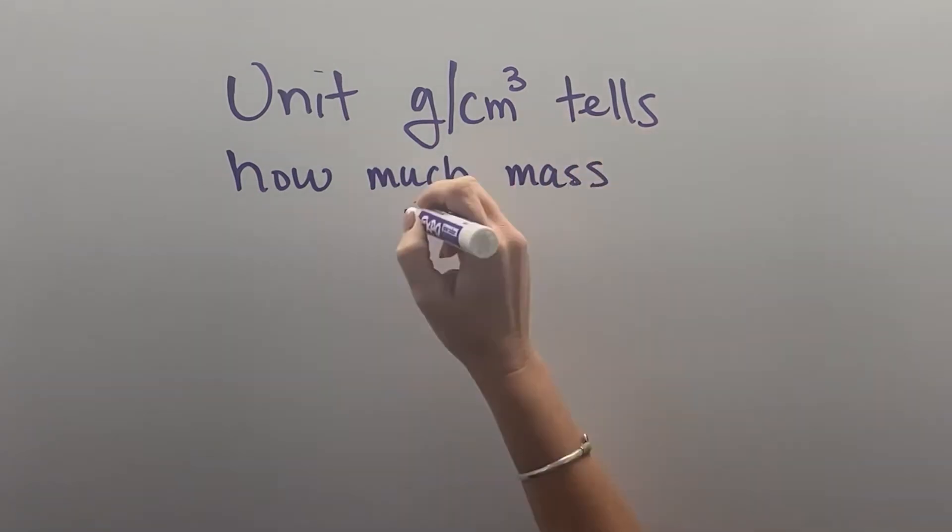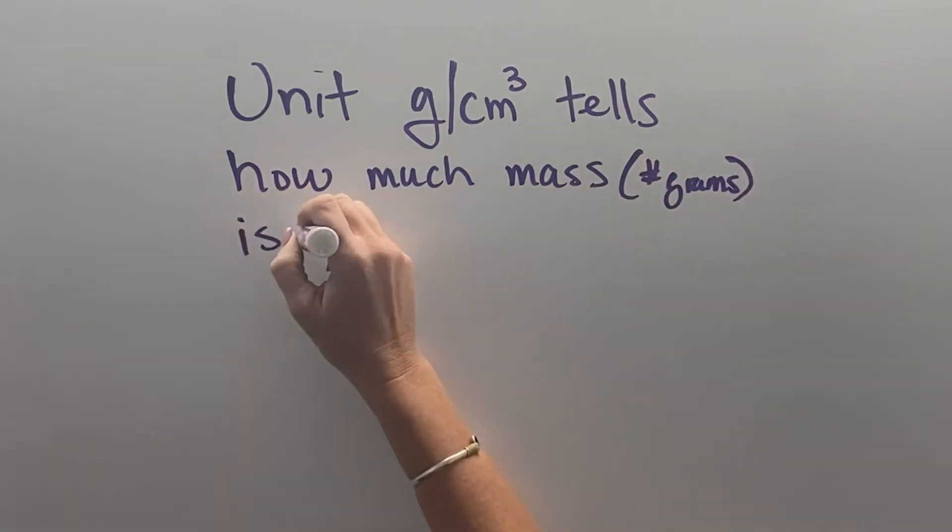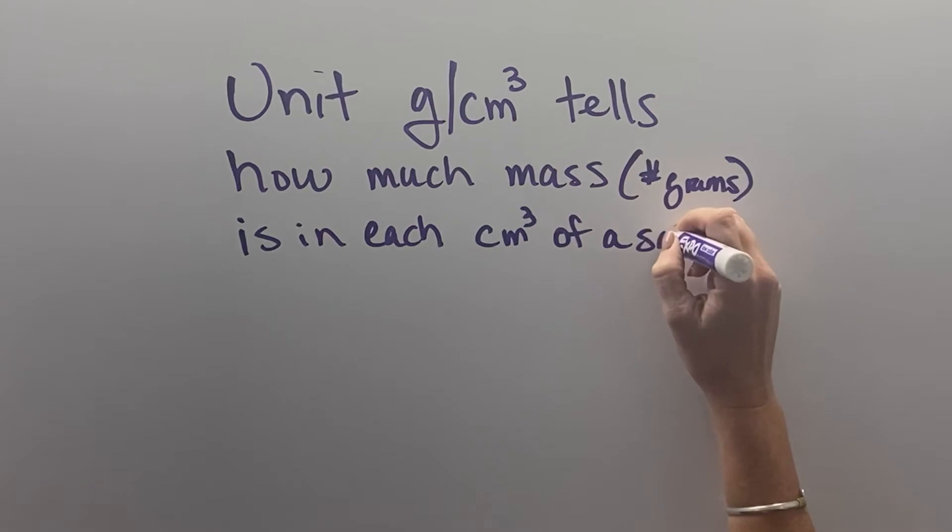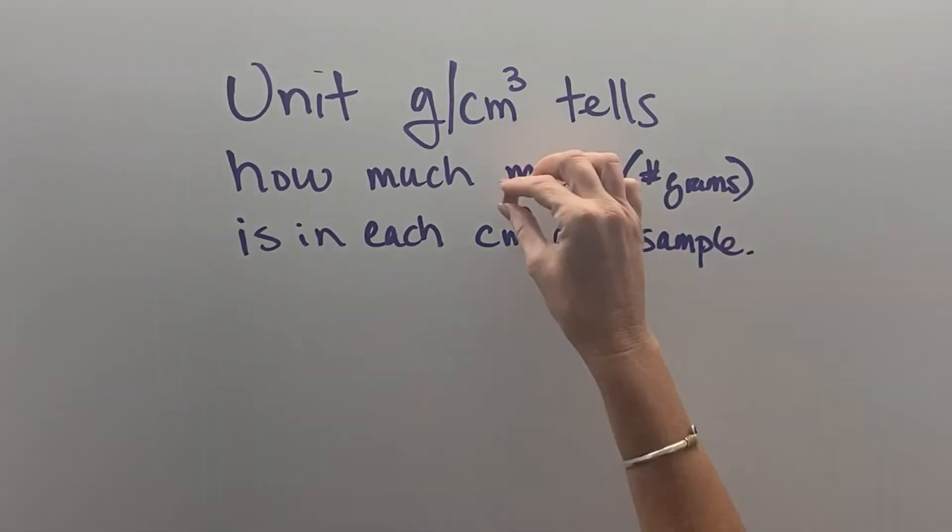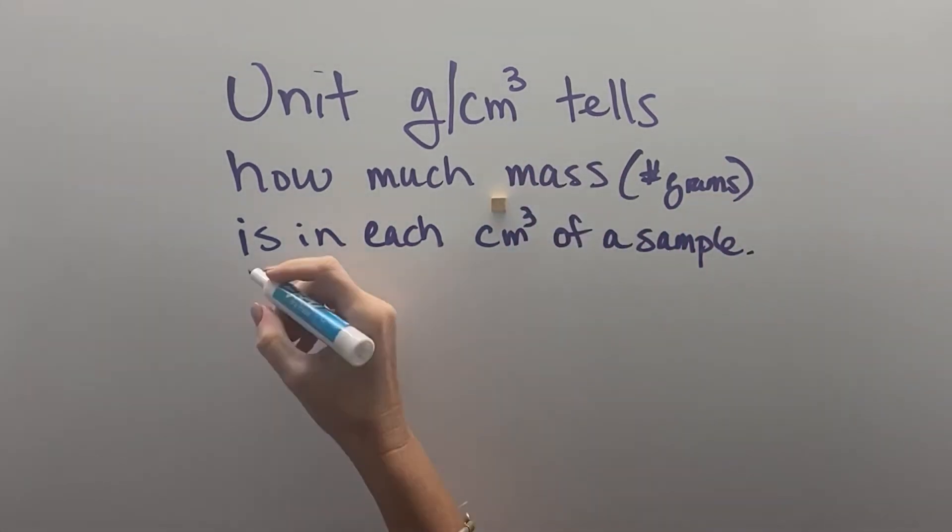So when we use this unit, grams per cubic centimeter, it tells us how much mass, the number of grams, are in each cubic centimeter of a sample. The more cubic centimeters a sample has, the higher the mass will be.